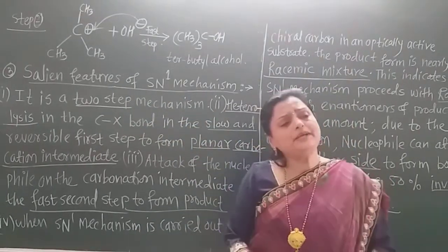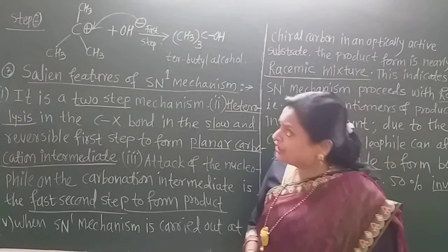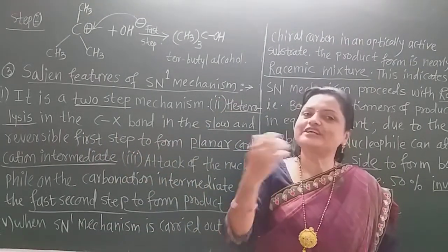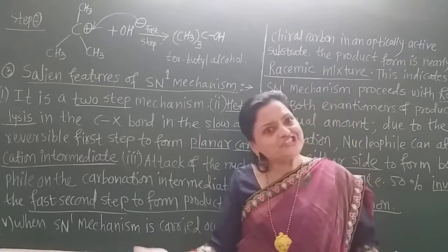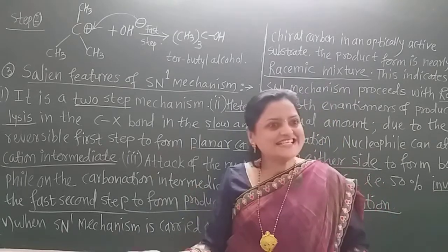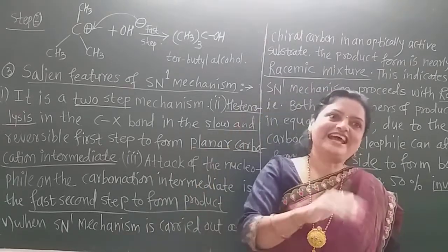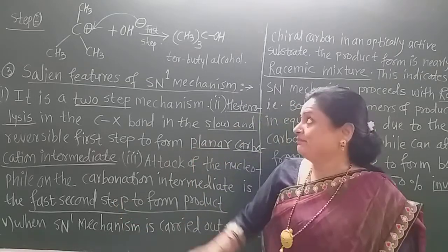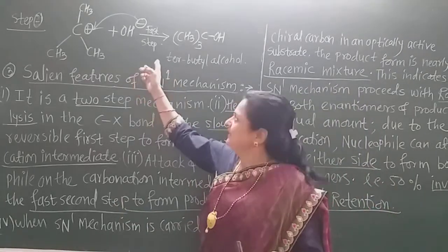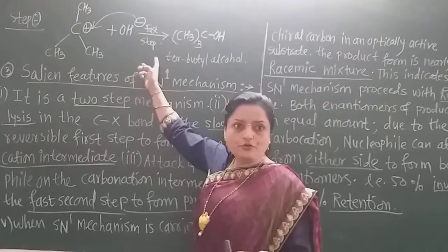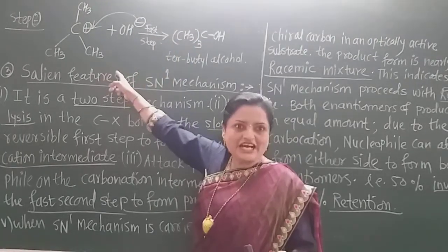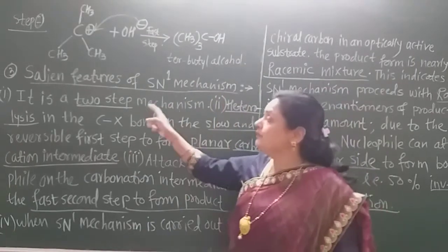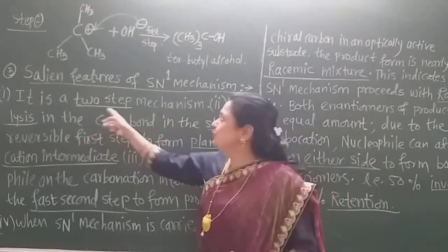In the salient features, the first point is that it is a two-step mechanism. In the first step, which is the rate determining step, there is heterolysis to form a carbocation and the halide. In the second step, the nucleophile attacks on the carbocation and there is formation of tertiary butyl alcohol.